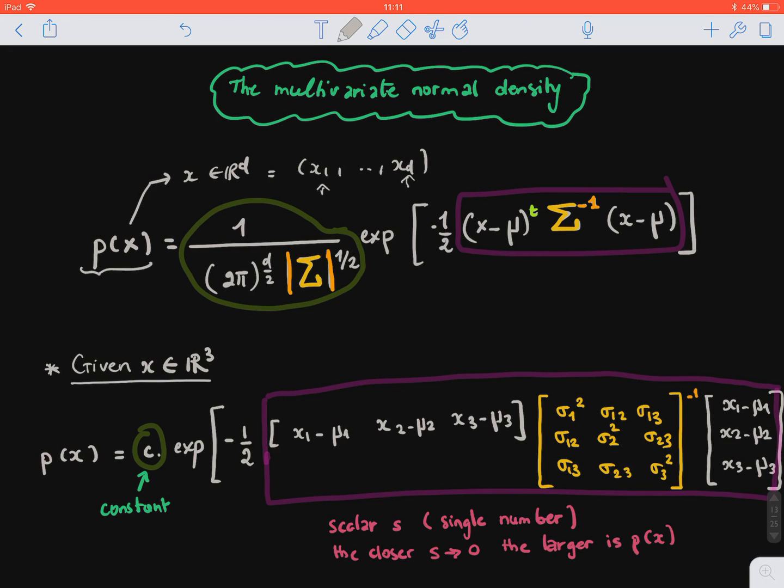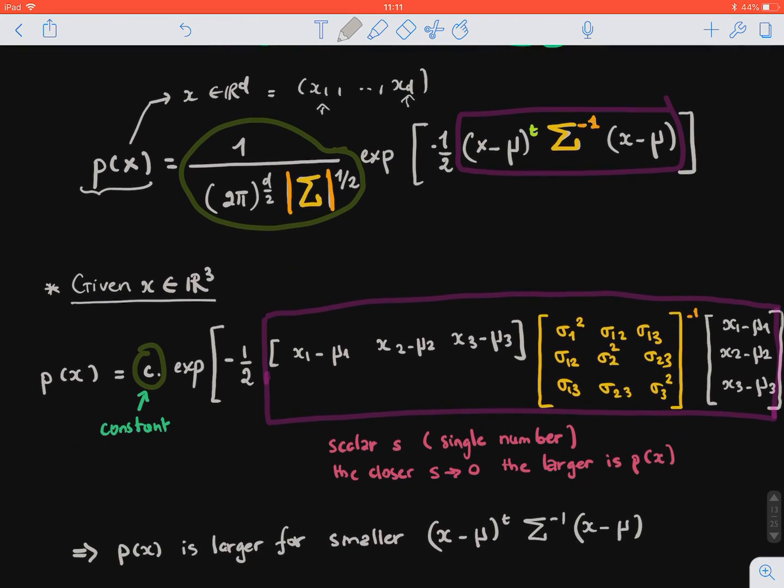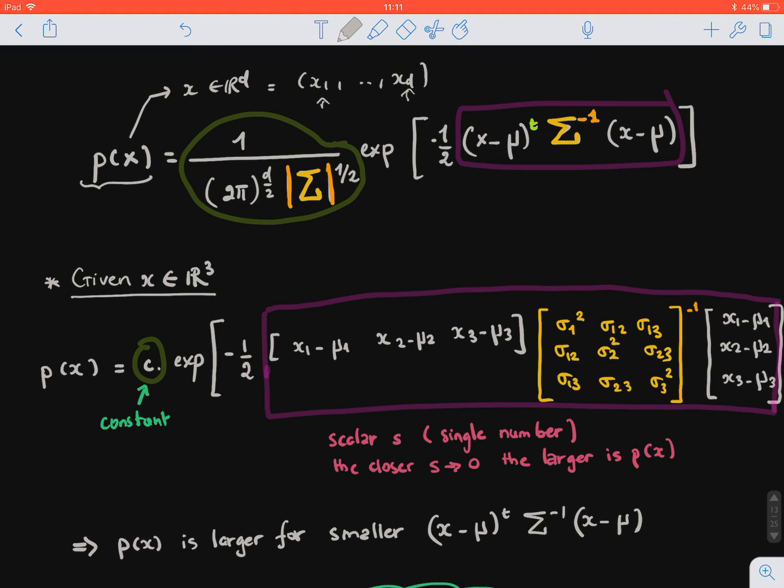For example, if x belongs to R³, so we have only three features.